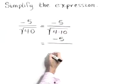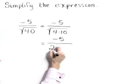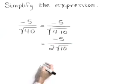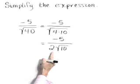So write negative 5 over the square root of 4 is 2. The 10 stays underneath. So we've taken as much out of the radical as possible.